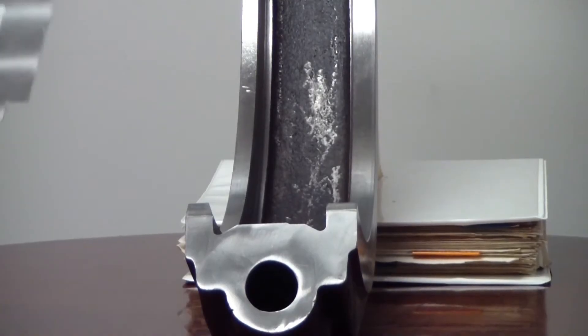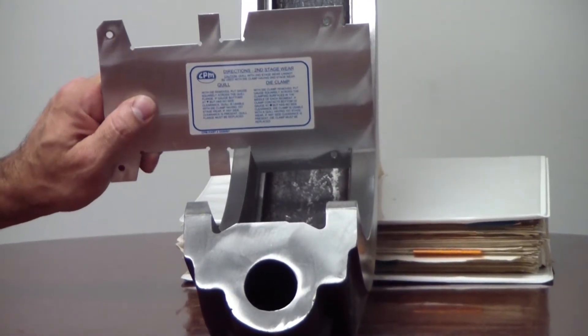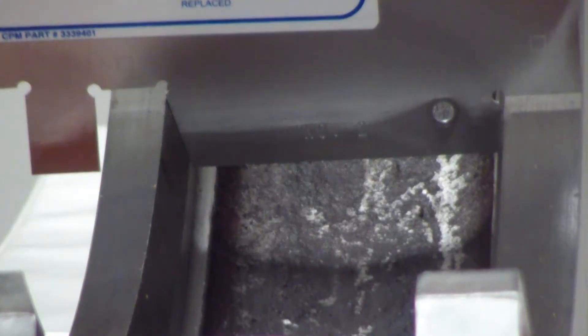Now to flip it over and demonstrate Stage 2. You'll notice that it's the same procedure as Stage 1, with a slightly different profile on the gauge.